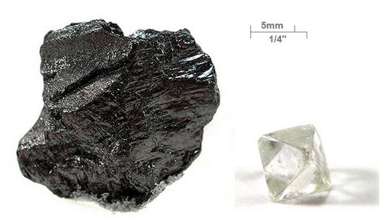The amorphous form is an assortment of carbon atoms in a non-crystalline, irregular, glassy state, not held in a crystalline macrostructure. It is present as a powder, and is the main constituent of substances such as charcoal, lampblack, and activated carbon. At normal pressures, carbon takes the form of graphite, in which each atom is bonded trigonally to three others in a plane composed of fused hexagonal rings, just like those in aromatic hydrocarbons. The resulting network is two-dimensional, and the flat sheets are stacked and loosely bonded through weak van der Waals forces. This gives graphite its softness and its cleaving properties. Because of the delocalization of one of the outer electrons of each atom to form a pi cloud, graphite conducts electricity, but only in the plane of each covalently bonded sheet. This results in a lower bulk electrical conductivity for carbon than for most metals. The delocalization also accounts for the energetic stability of graphite over diamond at room temperature.